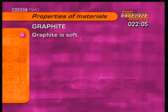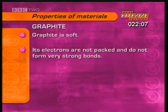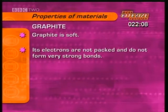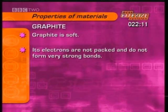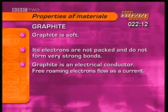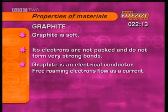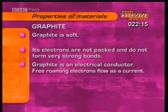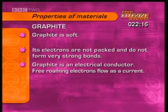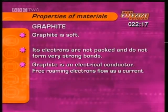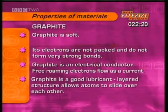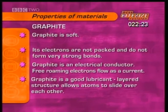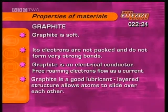Graphite is soft. Its electrons are not packed tightly between atoms and do not form very strong bonds. Graphite is an electrical conductor because free-roaming electrons between the layers of graphite can flow as a current. Graphite is also a good lubricant because the layers in its structure can slide over each other.